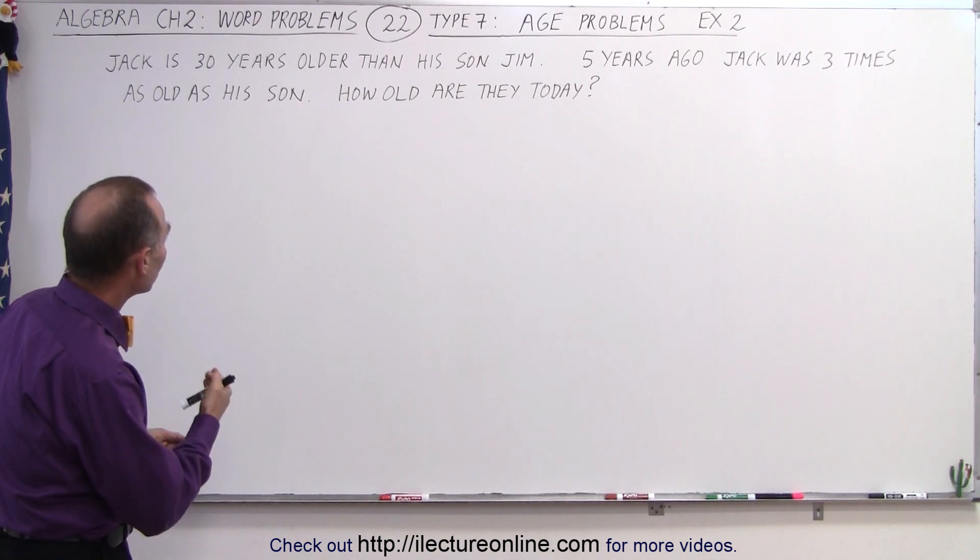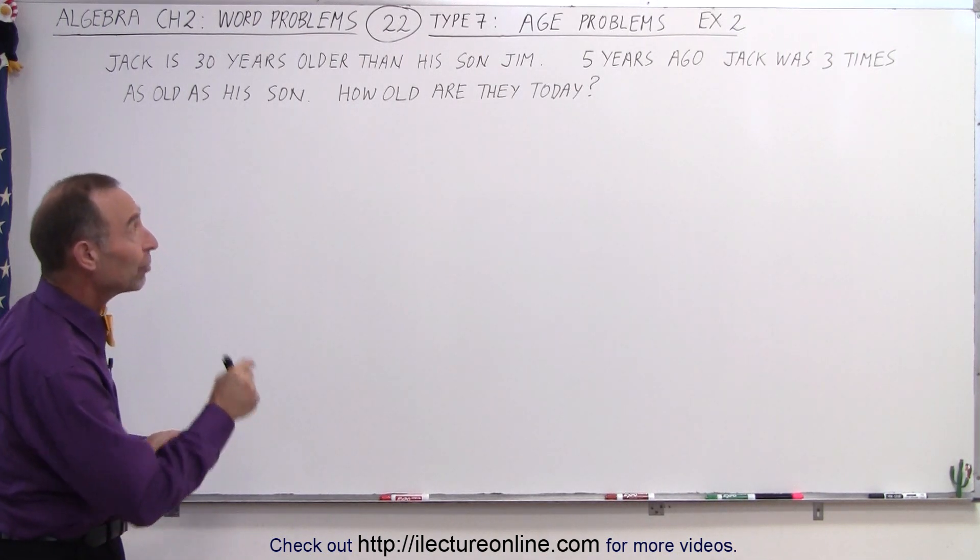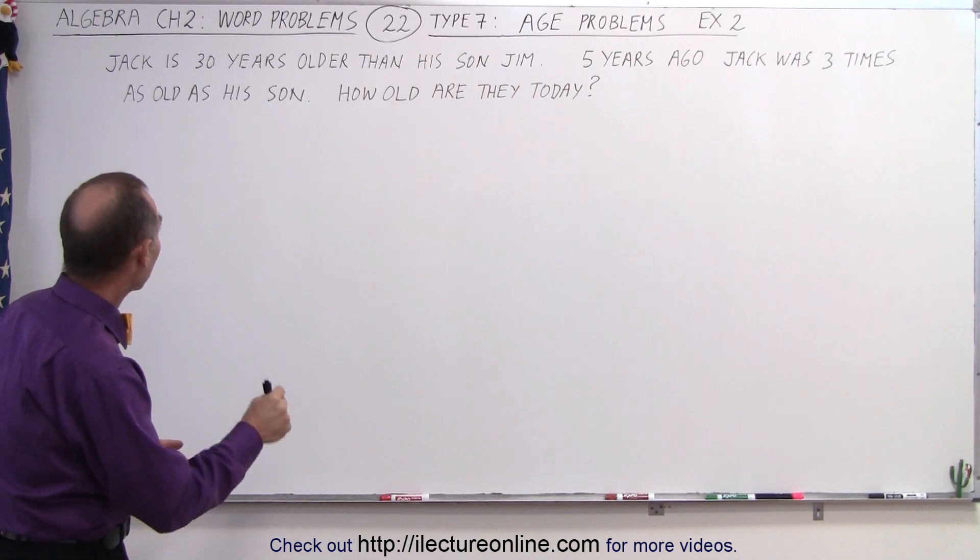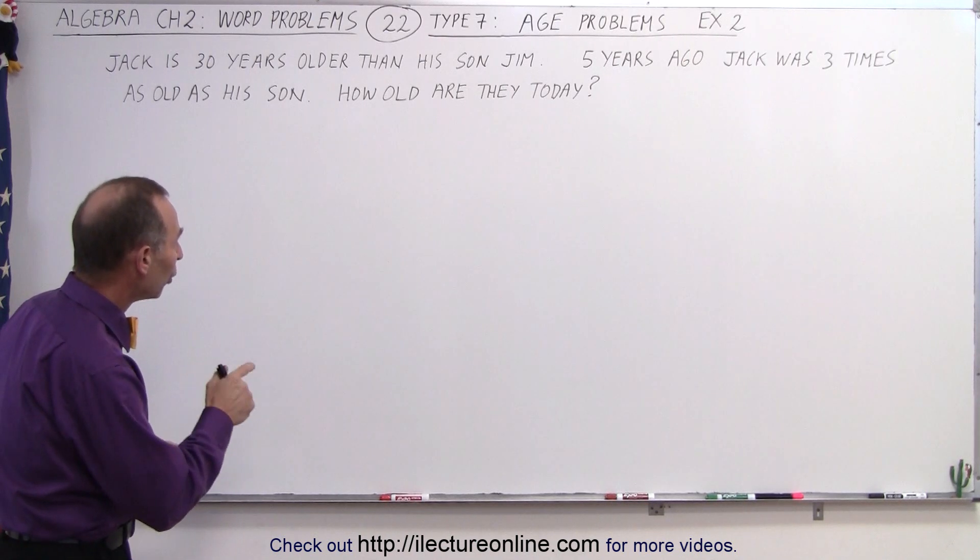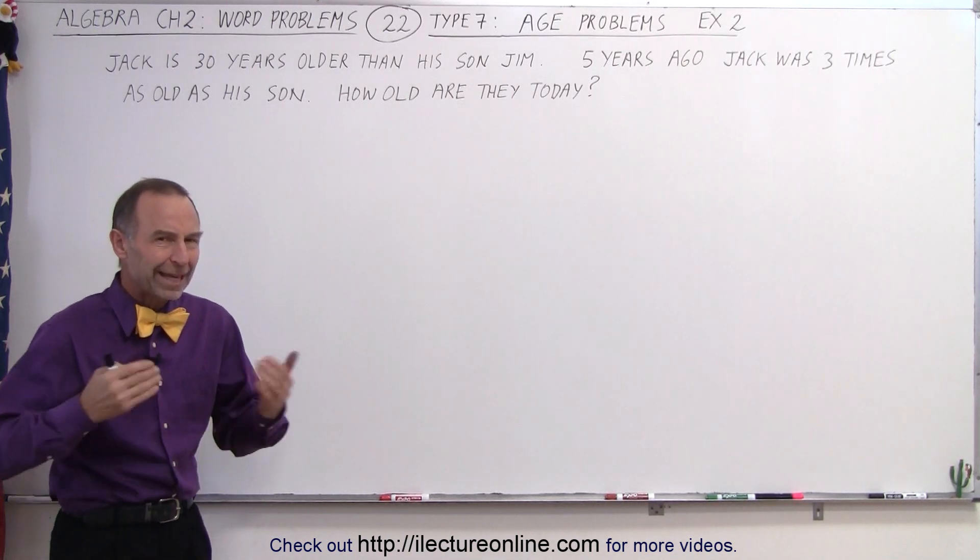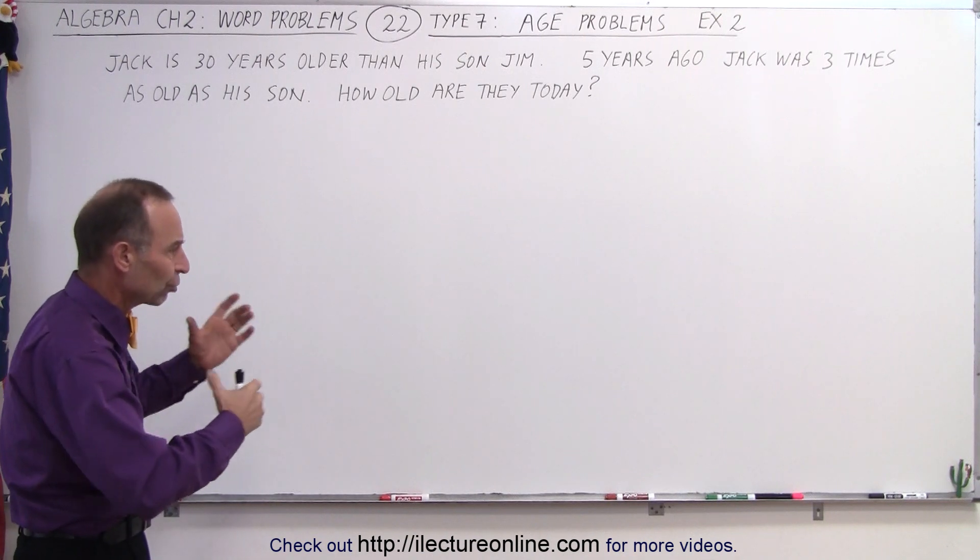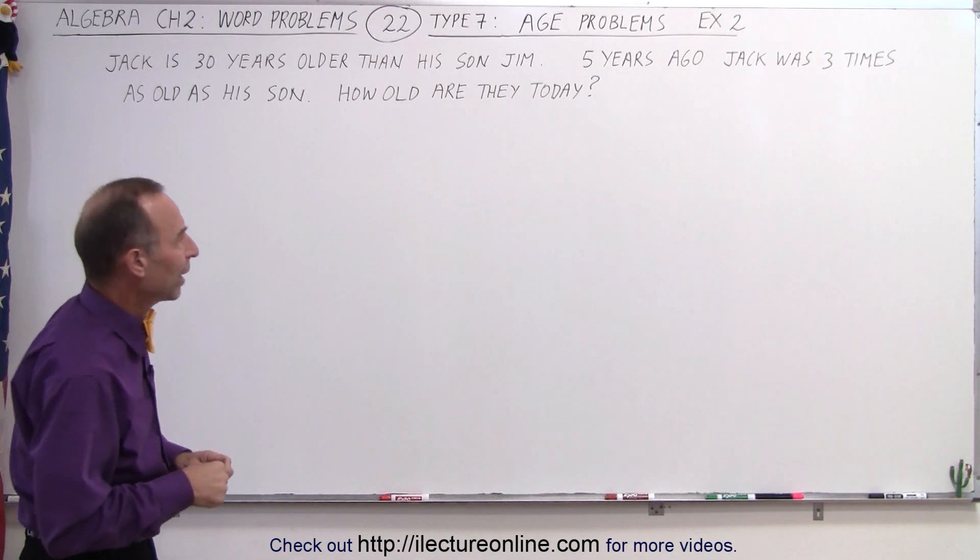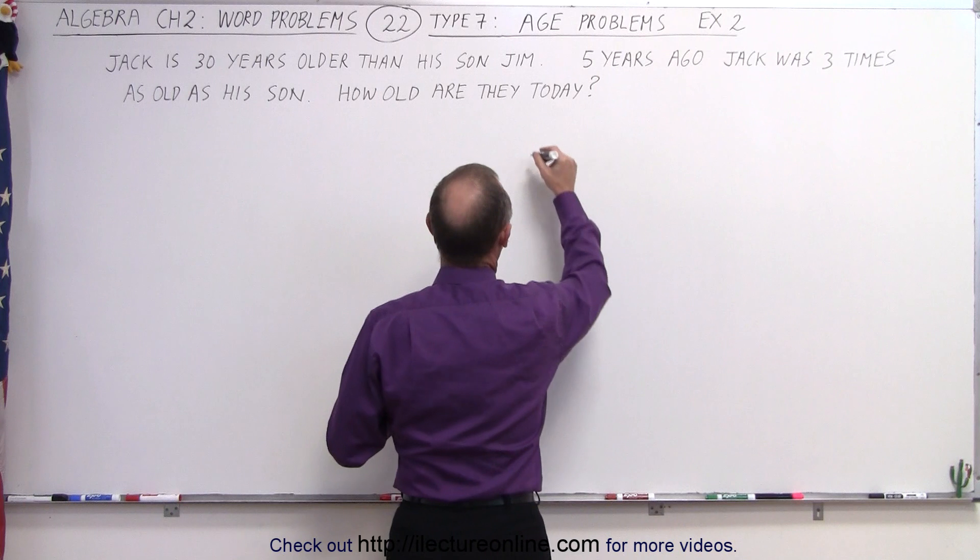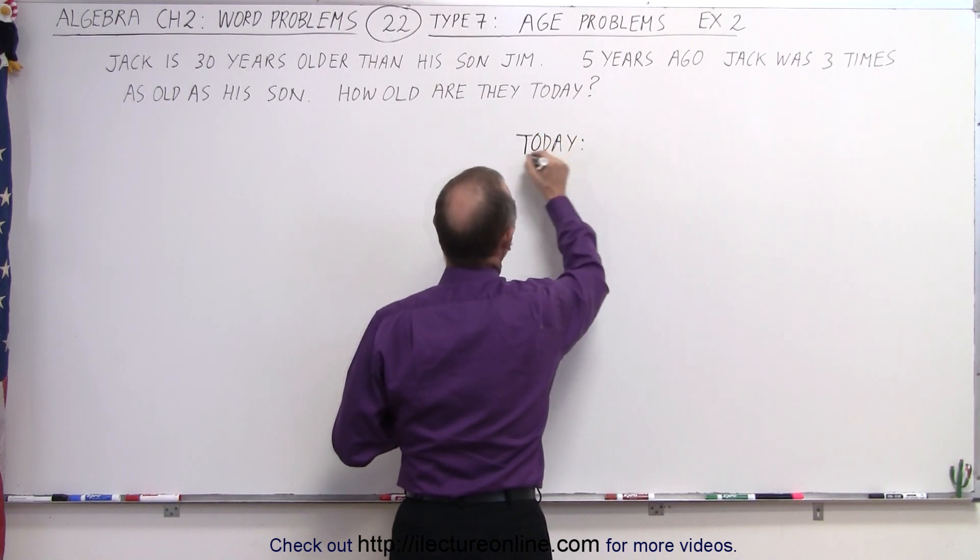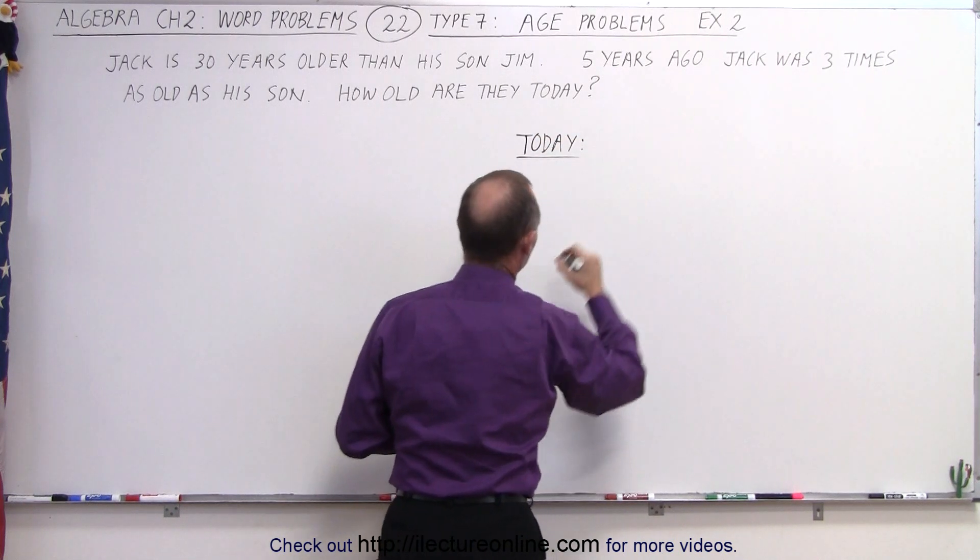Jack is 30 years older than his son Jim. Five years ago, Jack was three times as old as his son. How old are they today? We need to express x in terms of their ages in two different ways. We need to do it for today and we'll need to do it again for five years ago.